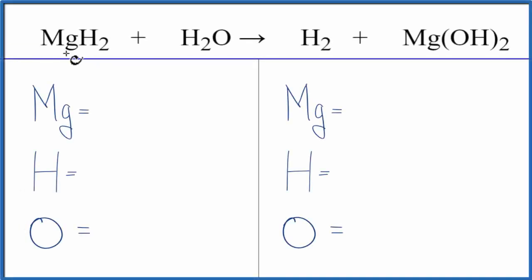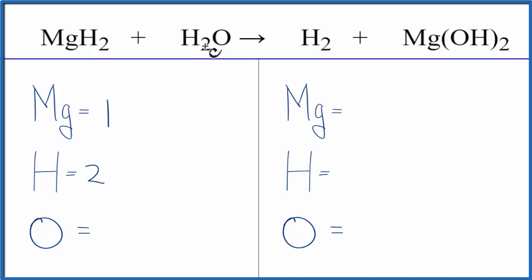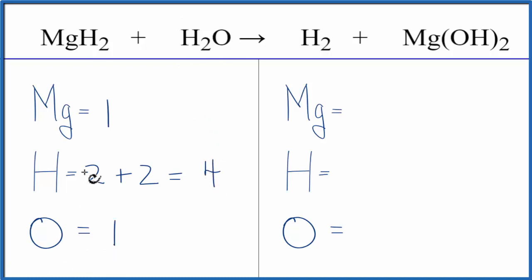To balance this equation, MgH₂ plus H₂O, let's count the atoms up on each side of the equation. We have one magnesium and then two hydrogens, then we have two more right here, so we have to count all the hydrogens. That gives us a total of four hydrogen atoms and then the one oxygen atom.